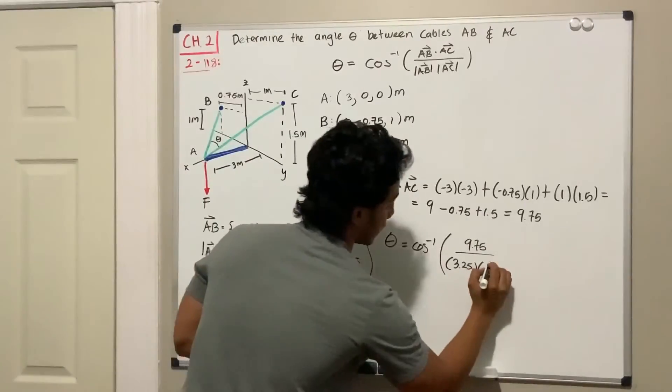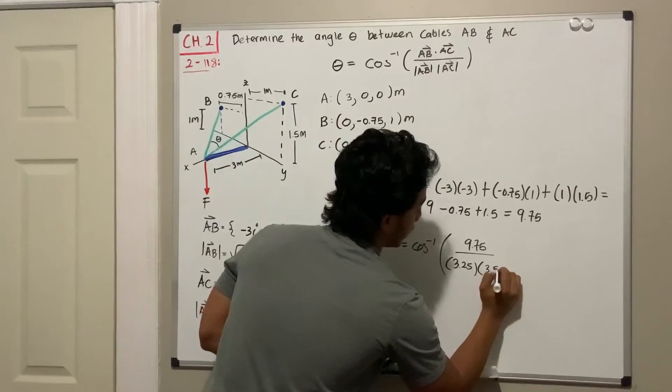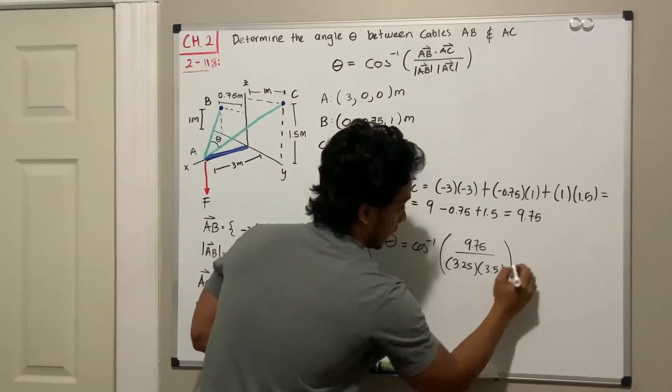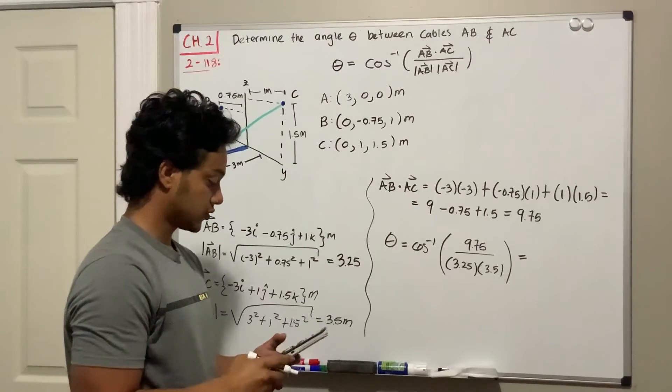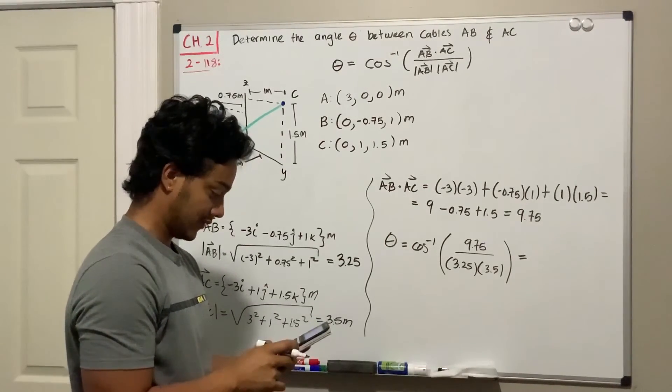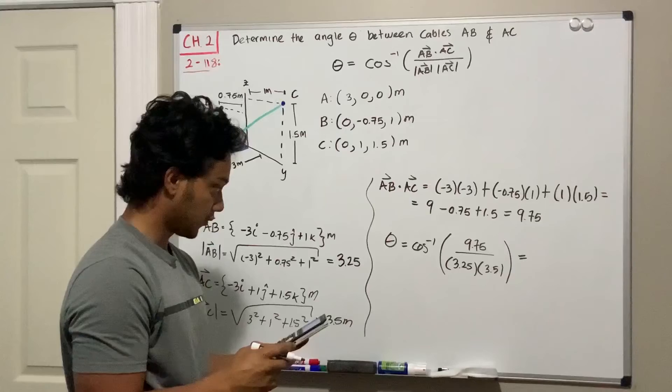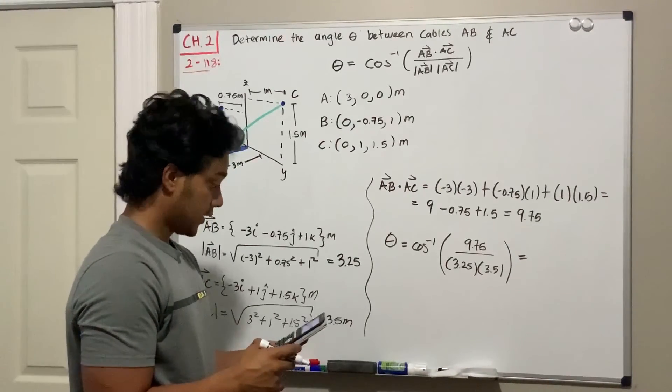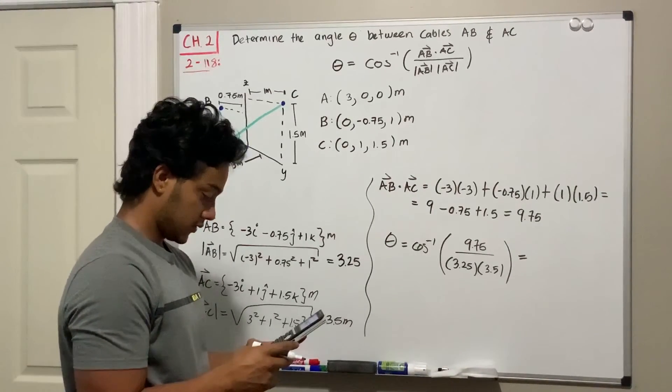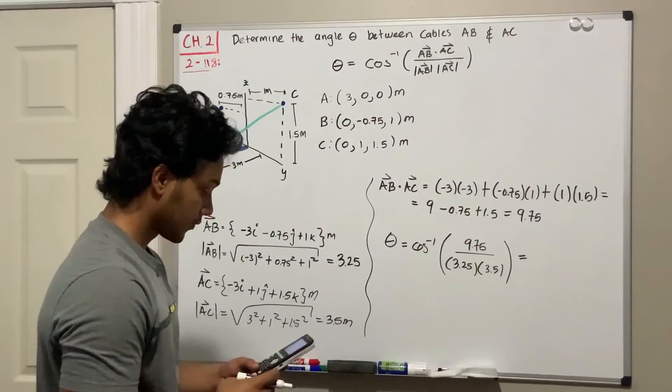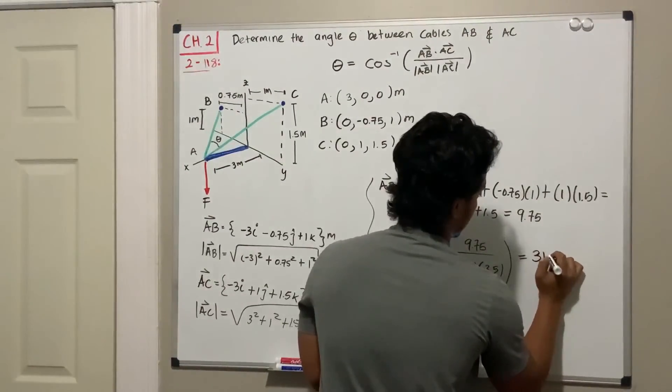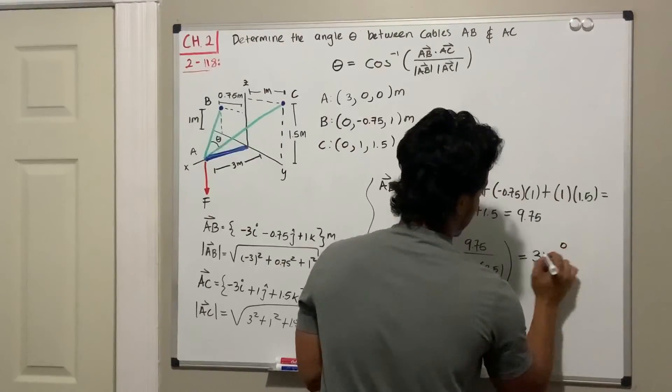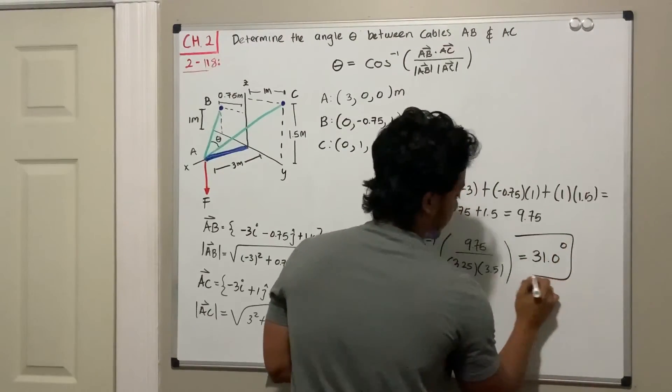AC, which is 3.5. Let's see what we get. We use our calculator: inverse cosine of 9.75 divided by 3.25 and also divided by 3.5. This gives 31.0 degrees, and this is